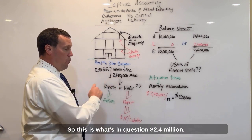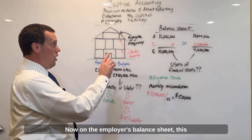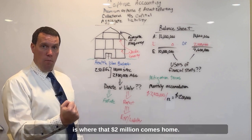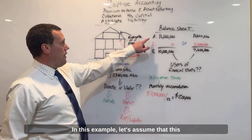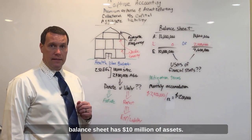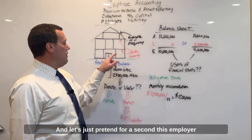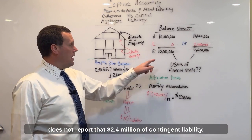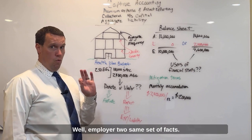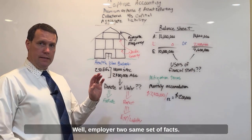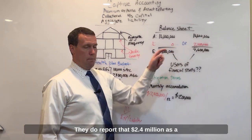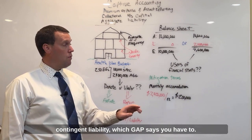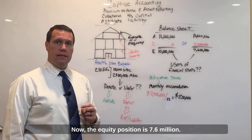So this $2.4 million dollars is what's in question. On the employer's balance sheet, this is where that liability comes home. In this example, let's assume this balance sheet has $10 million dollars of assets. Let's pretend for a second this employer does not report that $2.4 million dollars of contingent liability — therefore, they have $10 million dollars of equity. Employer two, with the same set of facts, does report that $2.4 million dollars as a contingent liability, which GAAP says you have to. Now, the equity position is $7.6 million.